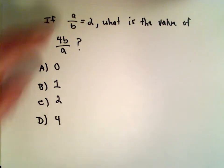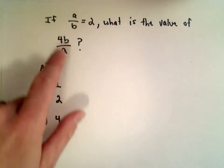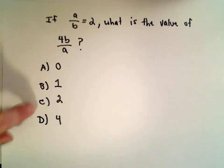Okay, here we have the question that says if A divided by B equals 2, what is the value of 4 times B divided by A? So we have the answer choices 0, 1, 2, and 4.